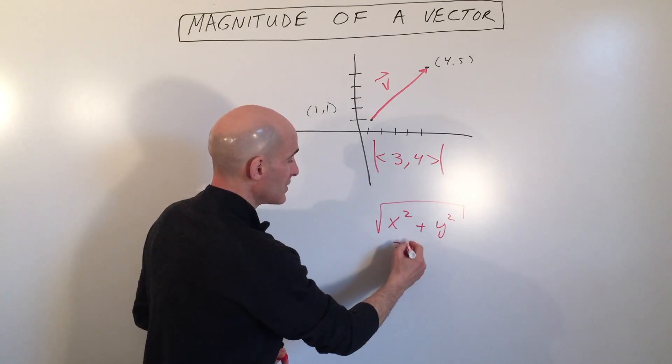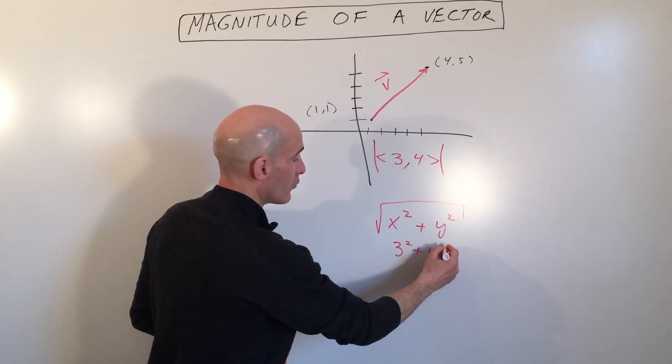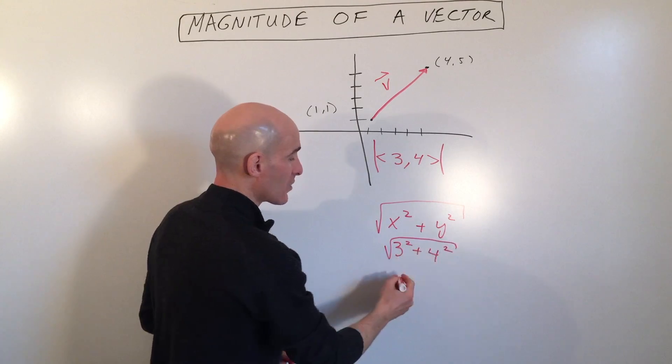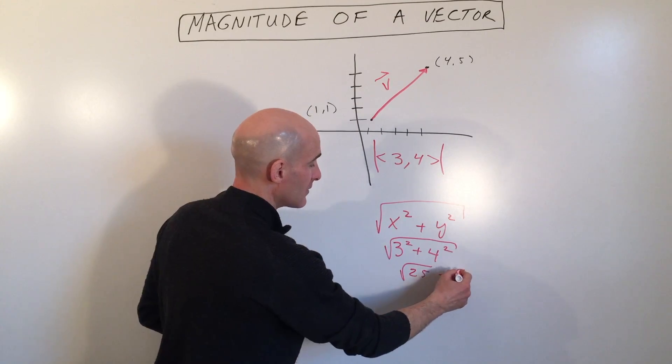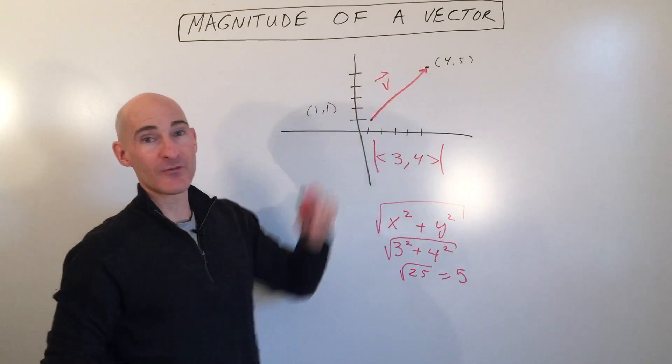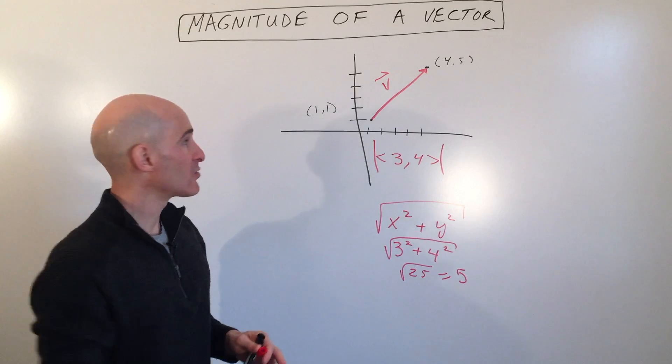So in this case, we have 3 squared plus 4 squared. Take the square root, we get 9 plus 16 is 25. The square root of 25 equals 5. And you can see this is just based on the Pythagorean theorem.